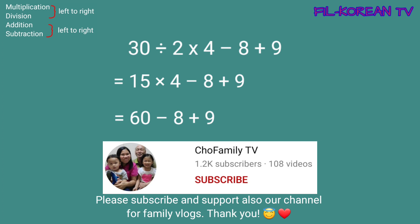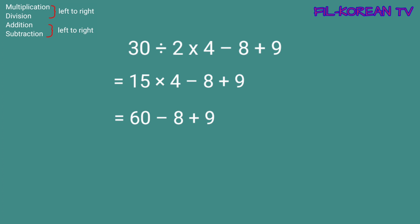Dalawang operation na lang yung natira: subtraction and addition. Ang gagawin natin, left to right ang pag-solve. Magma-minus muna tayo bago mag-plus. 60 minus 8 equals 52. Kaya magiging 52 plus 9. At eto na yung last nating isosolve. 52 plus 9 equals 61. So the answer is 61.